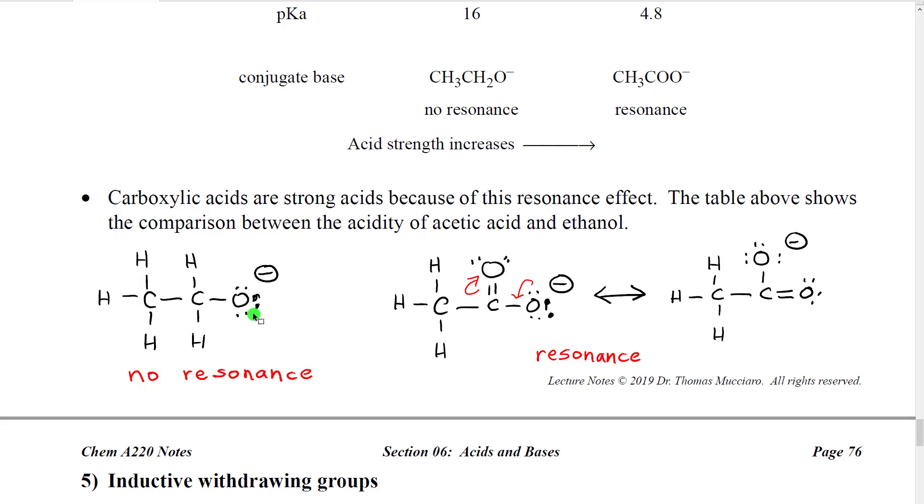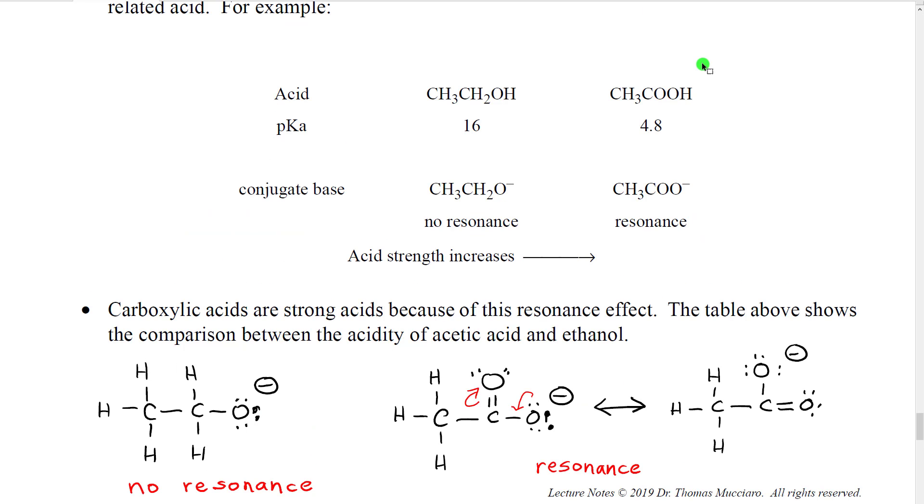Here is the structure of the conjugate base when we deprotonate ethanol. We get this pair of electrons, get stuck on that oxygen, has a high electron density, a lot of repulsive forces, high potential energy. In contrast, here, this is the structure of the conjugate base of acetic acid. We took the hydrogen off, we get a pair of electrons here, similar to that, but now these electrons can move around inside the molecule and spread out onto the other oxygen. So, what we get is, the extra electron density is about half what it would be right here. That's going to make this more stable, that's going to make its acid stronger.